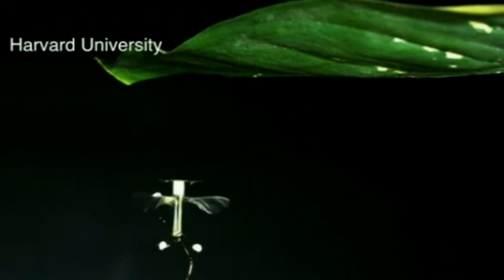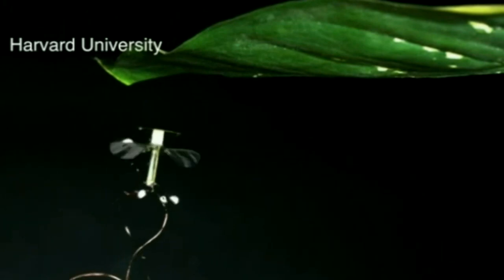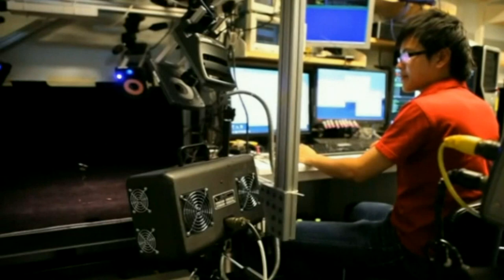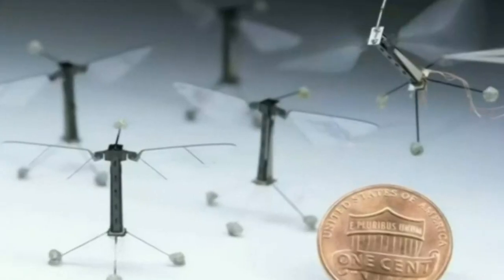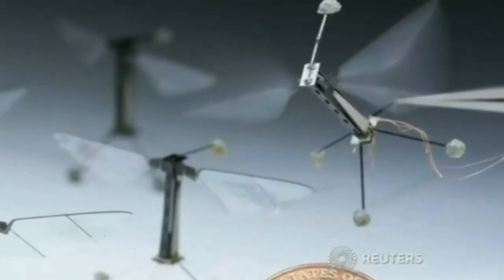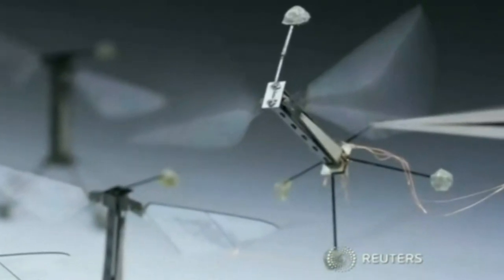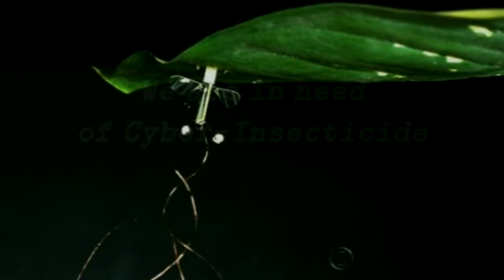It requires 1,000 times less power to perch than it does to hover, which dramatically extends the robo-bee's operational life. The upgrade brings the ultimate goal of swarms of tiny drones for use in military surveillance or search and rescue operations one step closer to reality.